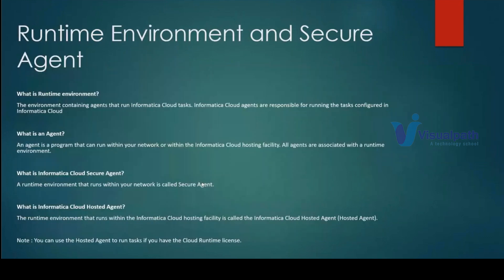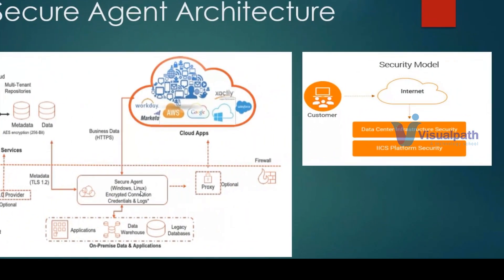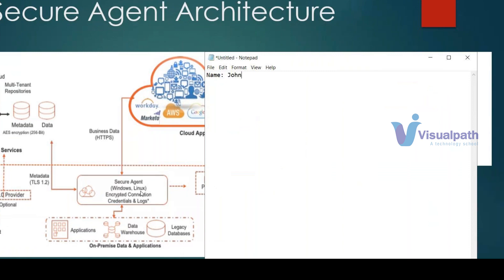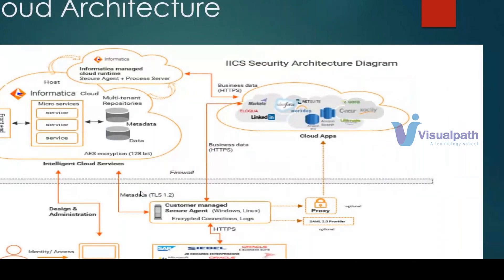The data being transmitted is encrypted metadata — not actual data. For example, if actual data is a name like 'John,' what gets stored in the repositories is not a readable format but an encrypted format. That encrypted data is what is stored, not the actual readable value.